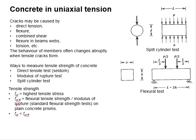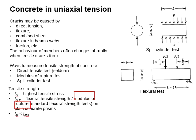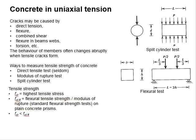These are some symbols for the tensile strength. FCT represents the direct tensile strength, while FCTFL represents the flexural tensile strength, or the modulus of fracture obtained from a standard flexural test on plain concrete prisms. Normally, FCT is smaller than FCTFL.